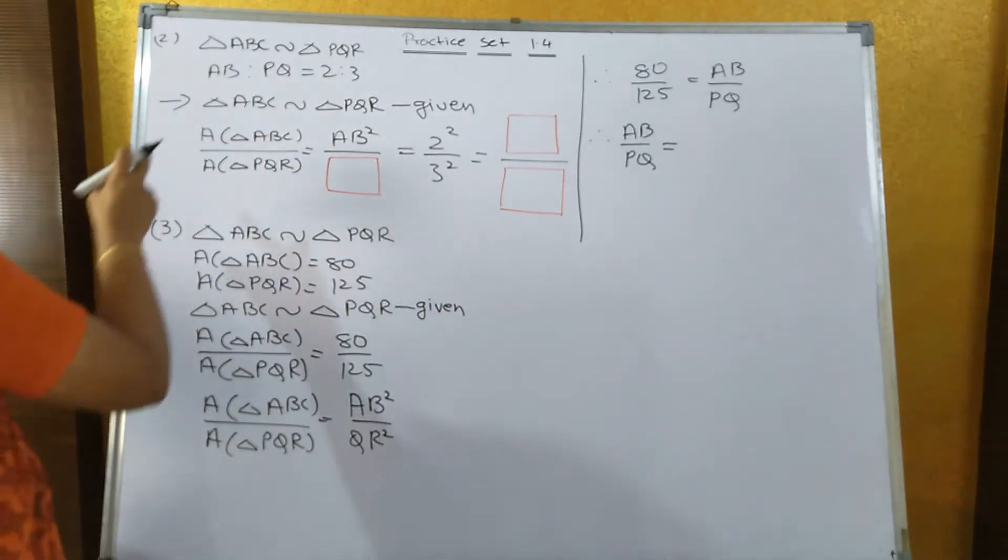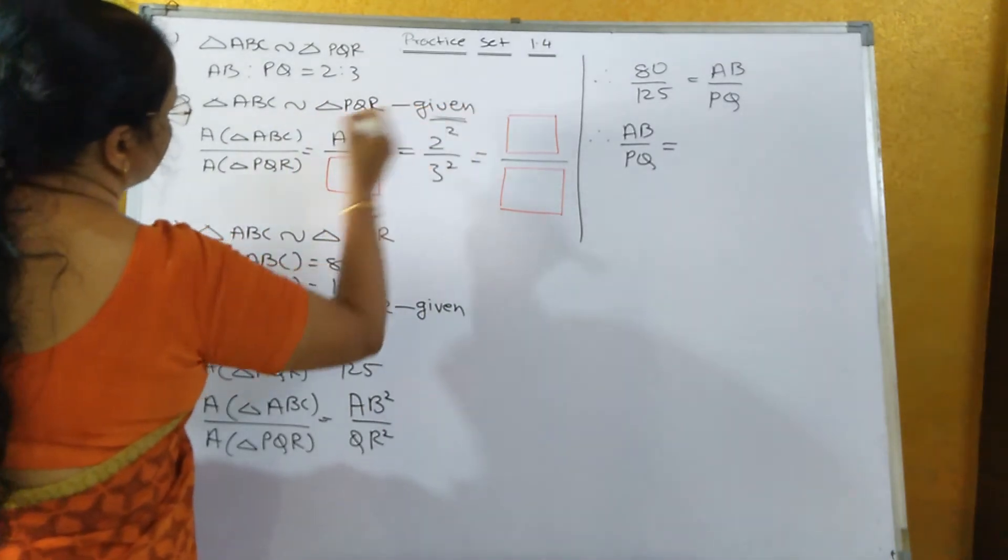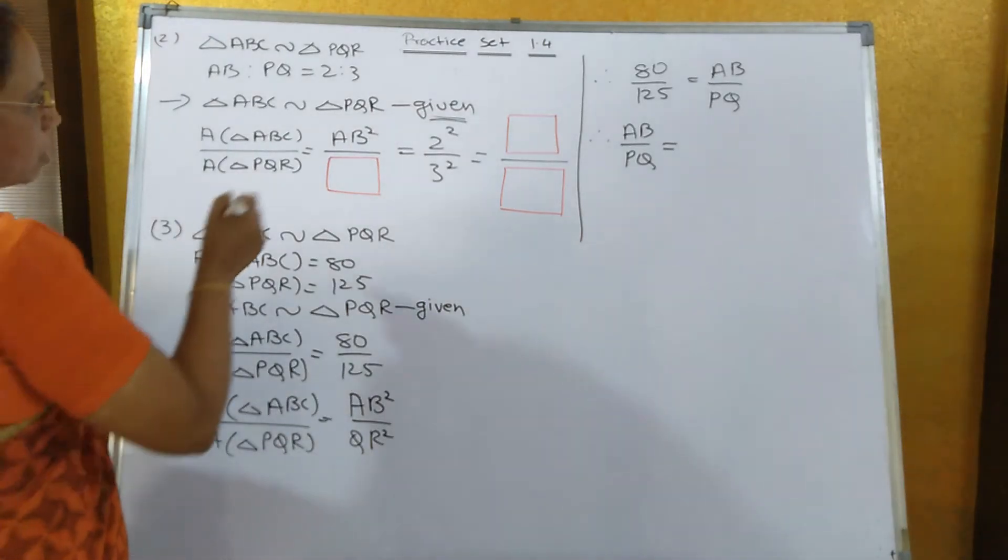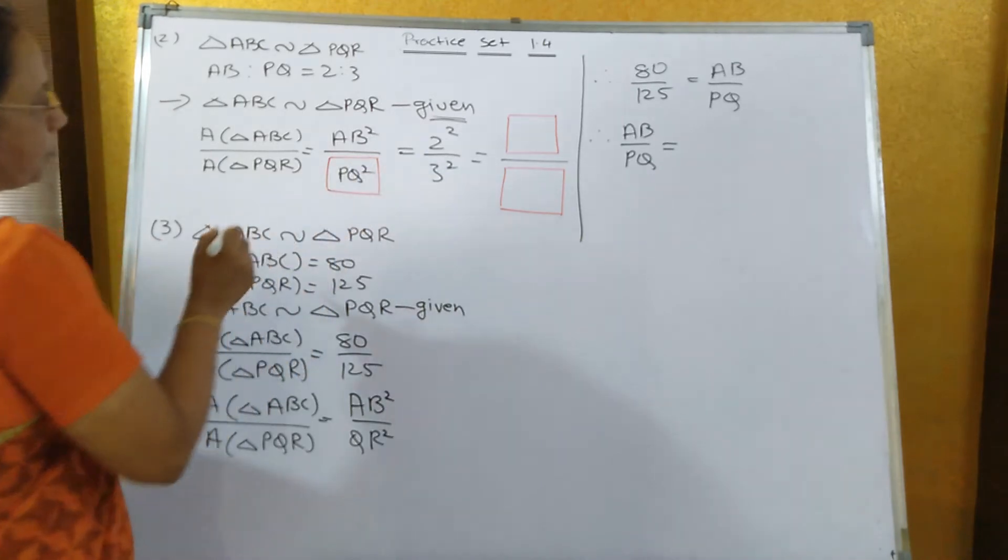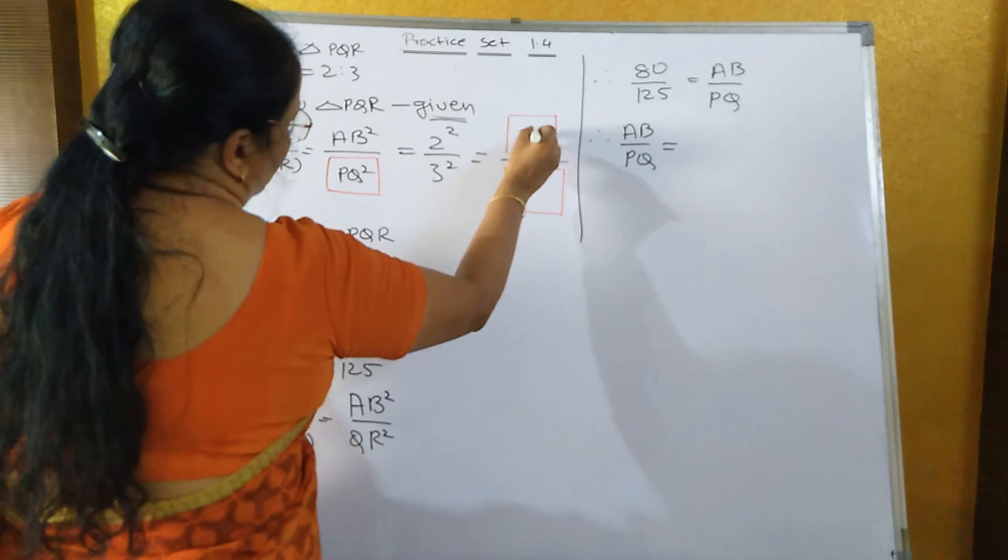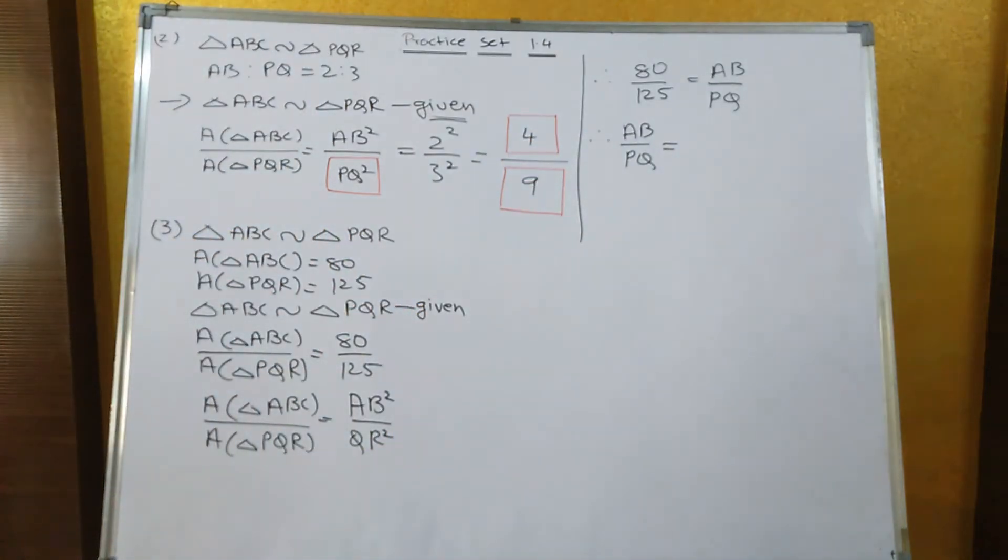Now area of triangle ABC similar to triangle PQR given, this is important in this exercise. So area of triangle ABC upon area of triangle PQR is equal to AB square upon PQ square, that is equal to 2 square upon 3 square, that is equal to 4 upon 9. This is the answer of this third sum.